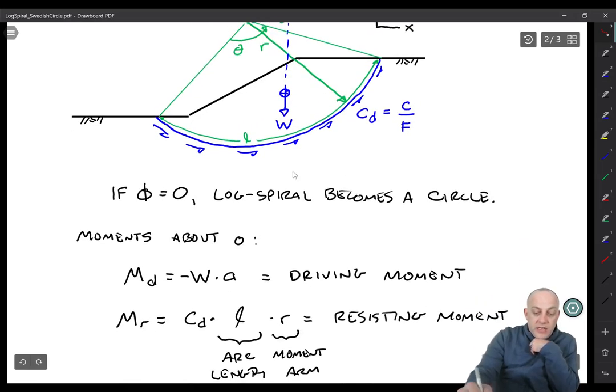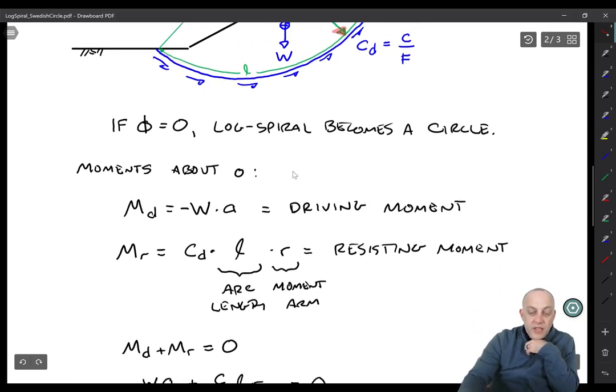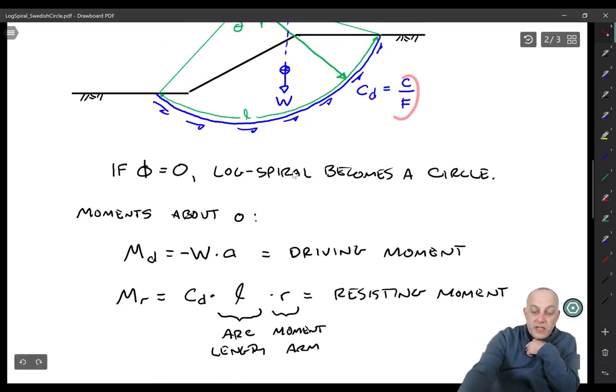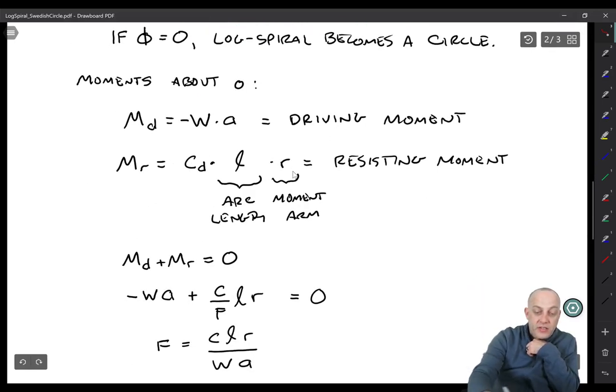And then the other moment is equal to the mobilized shear stress times the arc length. So you're integrating over this arc length to get a force times the moment arm or the distance, which is R for all points on the circle. C sub d is equal to C over F.